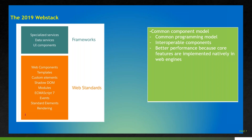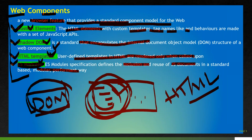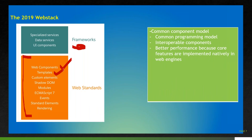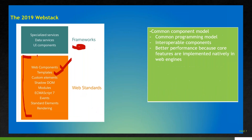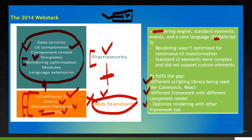So what happened in the 2019 web stack? Now in 2019, the web standard provided many more things, so we no longer needed to depend on the framework as much. We became framework-less but relied more on web standards. The web standard now supports web components, custom templates, custom elements — which was not supported in 2014 — and shadow DOM.